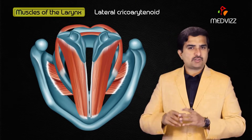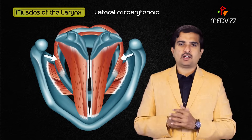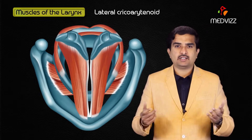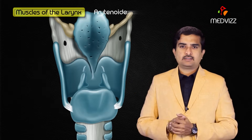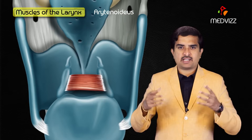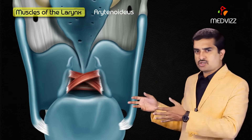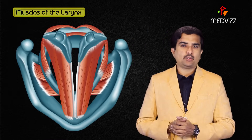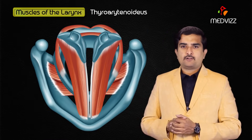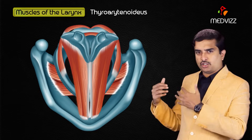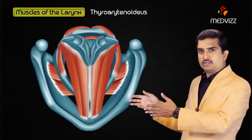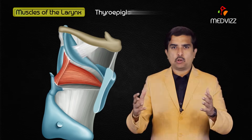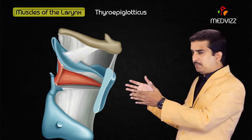The lateral cricoarytenoid medially rotates the arytenoid cartilage and adducts the vocal ligaments. The arytenoids muscle, composed of transverse and oblique parts, also adducts the vocal ligaments. The thyroarytenoid runs from the thyroid laminae to the arytenoid cartilage and adducts the vocal ligaments.